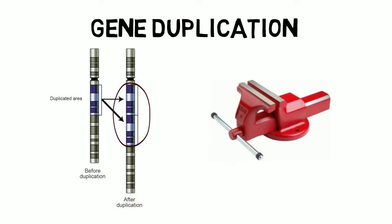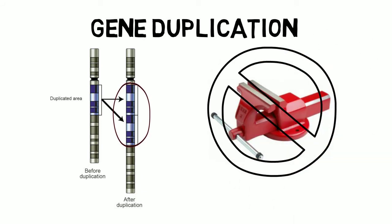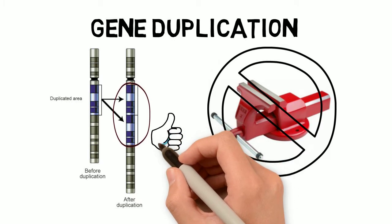Duplicate genes are often immune to the selective pressure under which genes normally exist. As a result, mutations may accumulate in the duplicated gene copy.